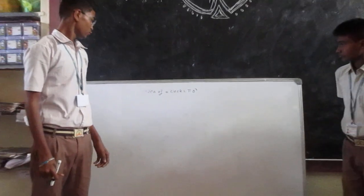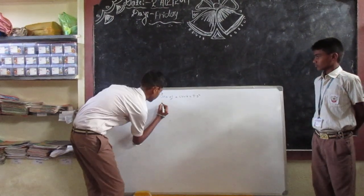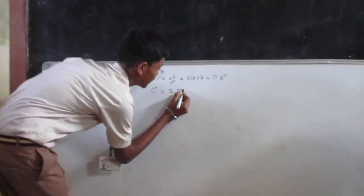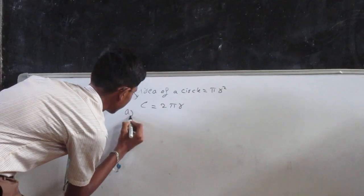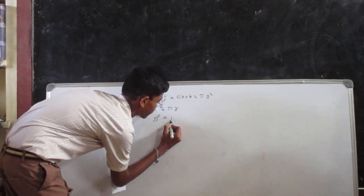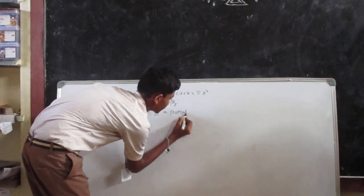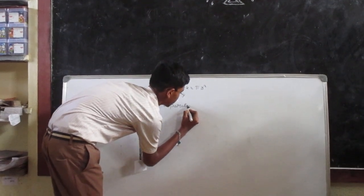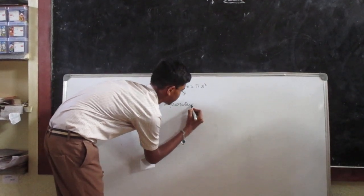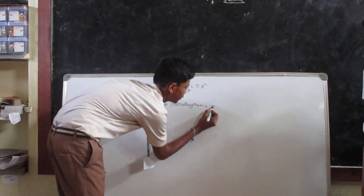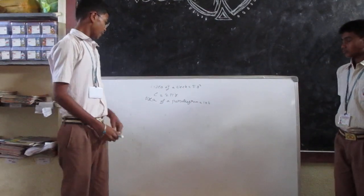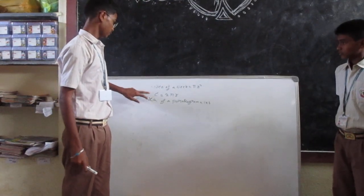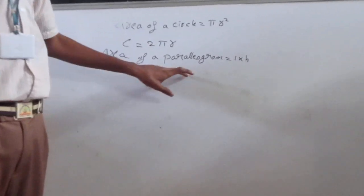Today I am going to use the circumference of a circle, that is 2 pi r, and the area of a parallelogram, that is length into height, to prove the area of a circle is pi r square. I will take this circumference of a circle and the area of a parallelogram.